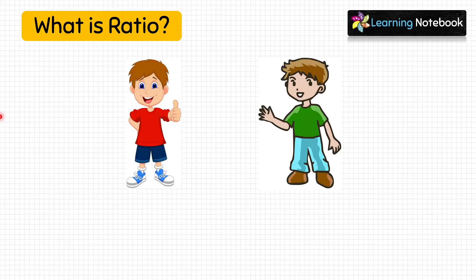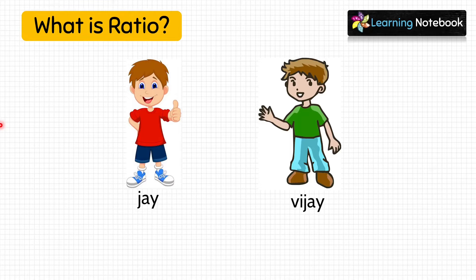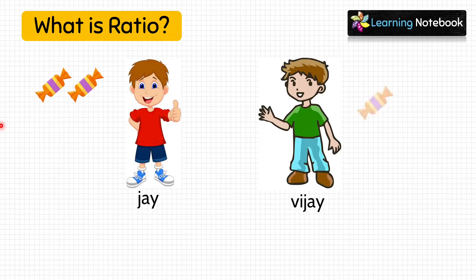These two boys, Jai and Vijay, used to receive chocolates from their mother. But mother always used to give 2 chocolates to Jai and 3 chocolates to Vijay.